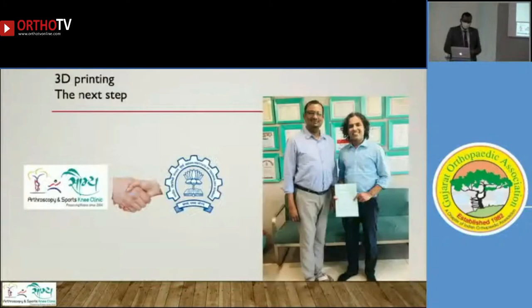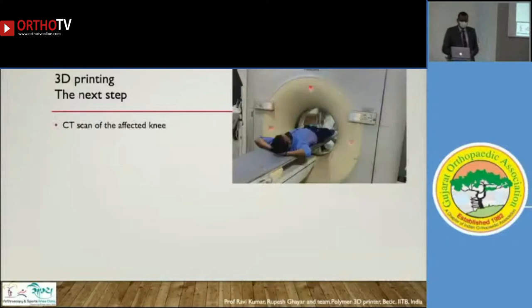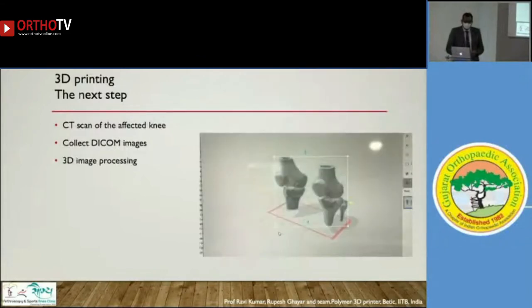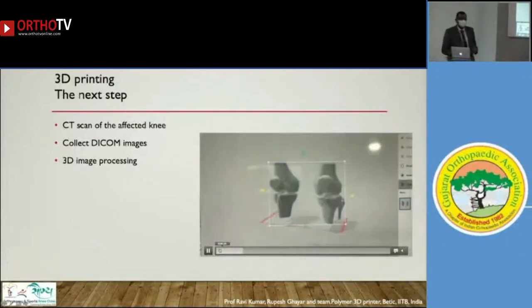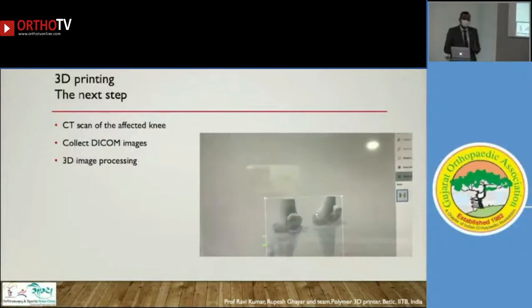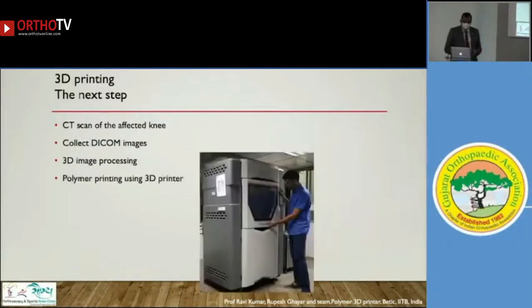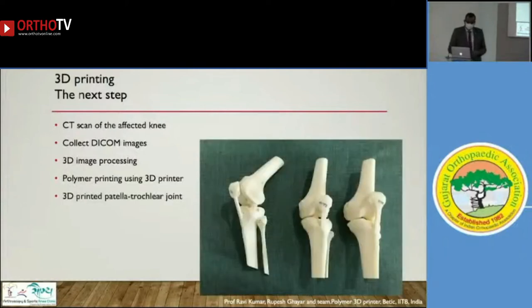So what we did was establish a tie-up between our institute and the Indian Institute of Technology. We obtain CT scans of all affected knee cases, collect DICOM images, and perform 3D image processing. We then select the images that need to be printed, share the data with a 3D printer, and perform 3D printing using polymer or ABS material as required.